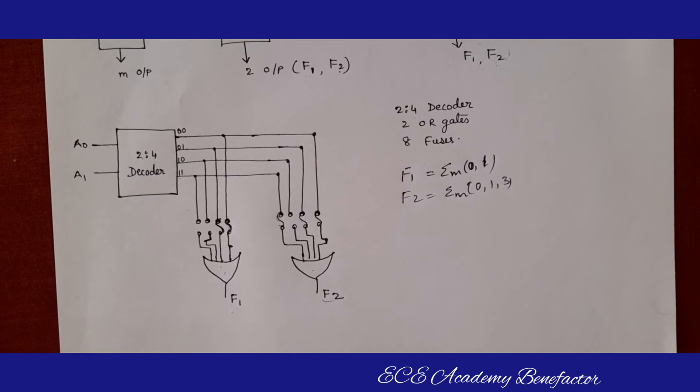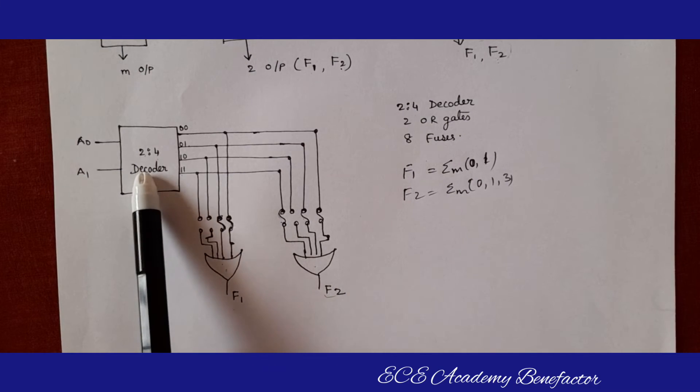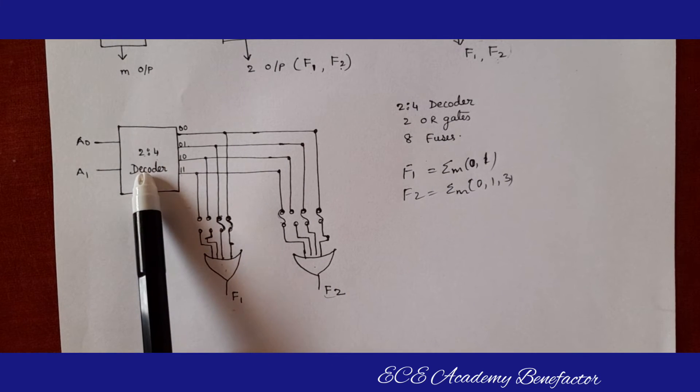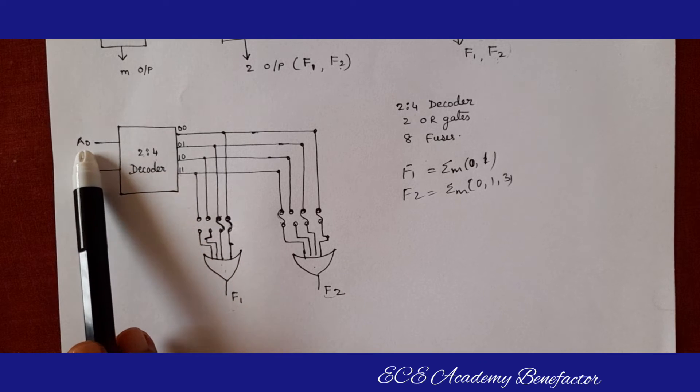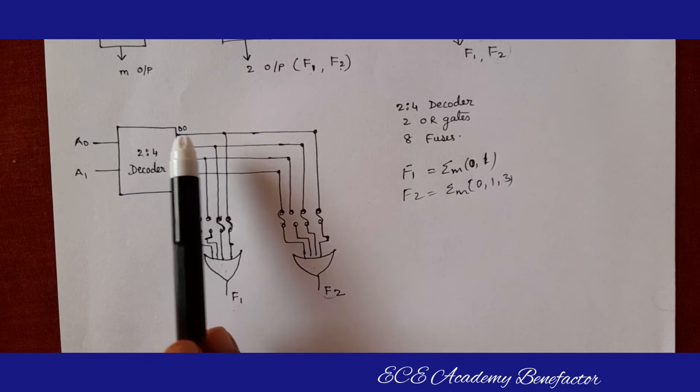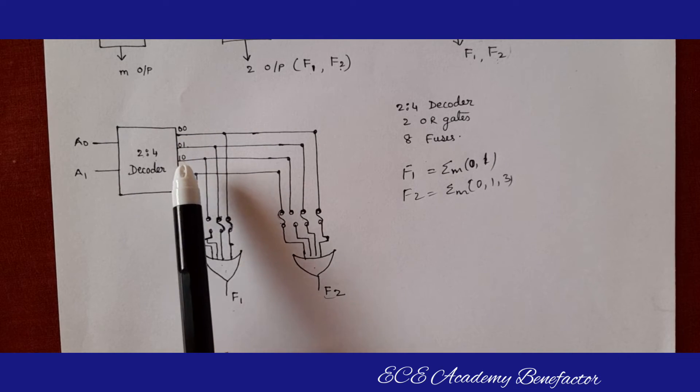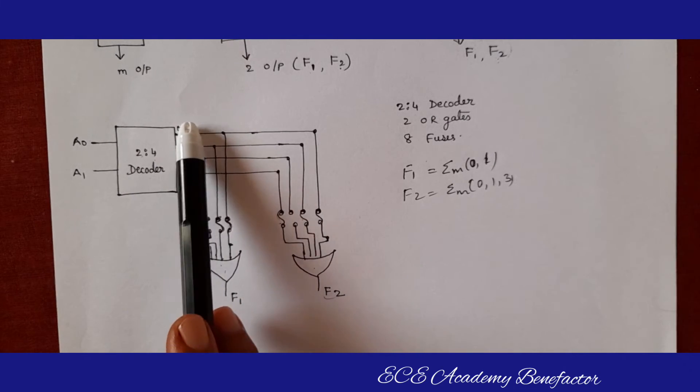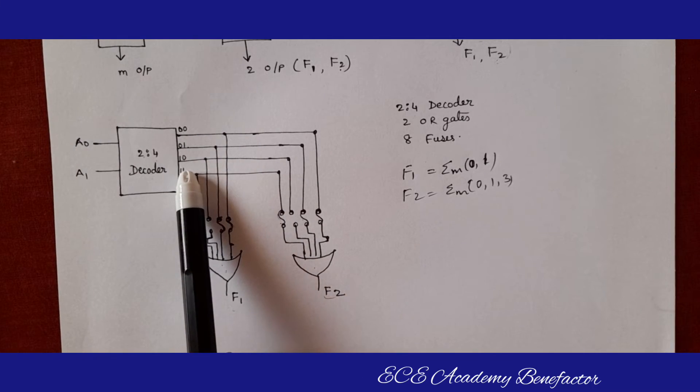Let us see the logic diagram. We have taken 2 is to 4 decoder, 2 inputs a0, a1. The output lines are 0 0, 0 1, 1 0, 1 1, which is 0, 1, 2, 3.